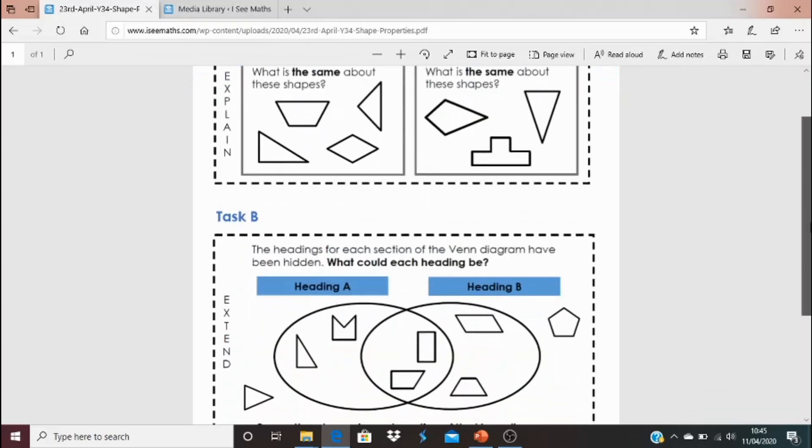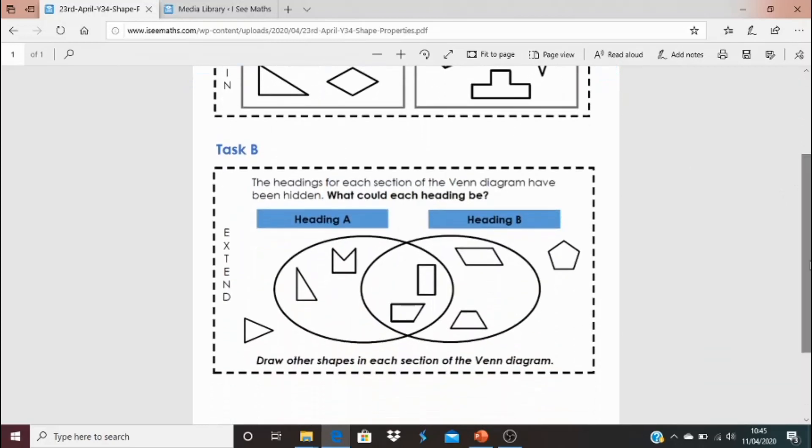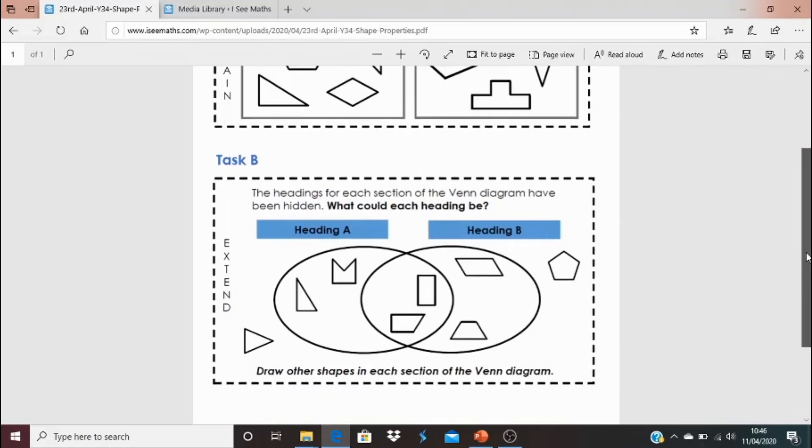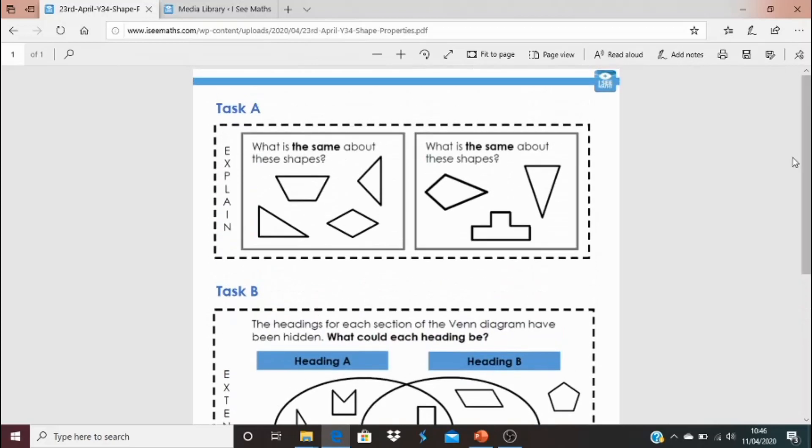Or you might want to have a go at task B here. Now this is a real extend task. We haven't done any work on Venn diagrams at all. But I just wondered if anyone could work out what could the heading be for shape A that is the same about all these shapes here but is not the same as the ones outside that oval there. What about heading B? What could this heading be? What do all these four shapes have in common that these four shapes don't have? Now if you do manage to have a go on task B I would love to hear what your thoughts are. And as normal I'll be back tomorrow and we'll continue our shape thinking. We're doing a great job. See you then.